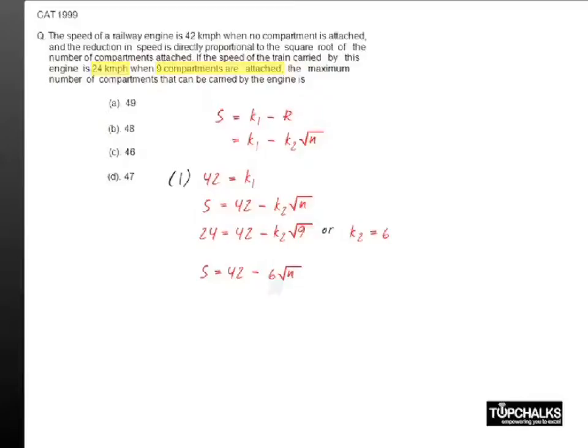the maximum number of compartments that can be attached to the train. So when does S become zero? When the value of n is equal to 49. What would it mean? It would mean that the speed of the train